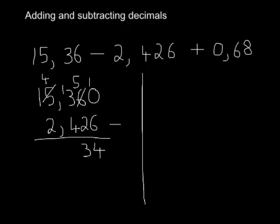Now it's 13 minus 4, which is 9. Keep the comma in the right place. 4 minus 2 is 2. 1 minus, and there's obviously a 0 there. 1 minus 0 is 1.